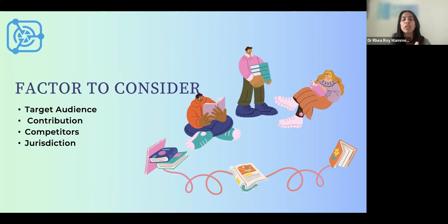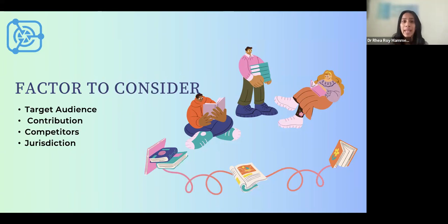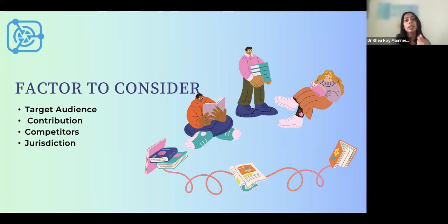There are various factors to consider once you decide your dissertation is publishable material. The first and foremost is your target audience. Though you are writing a dissertation with evaluators in mind, the moment you consider it for publication, you will have to go beyond just the evaluation committee. You will have to consider who your target audience is — students, industry experts, or peer researchers — and also keep in mind the editors and publishers you would want to reach out to.